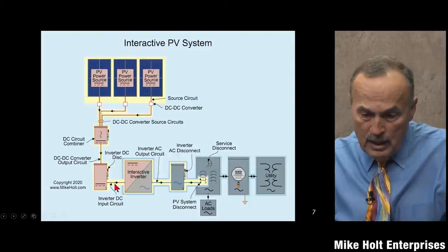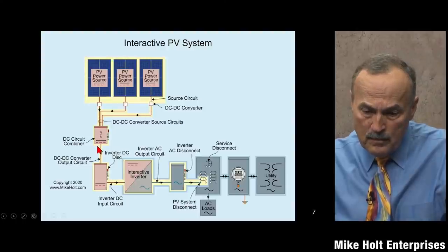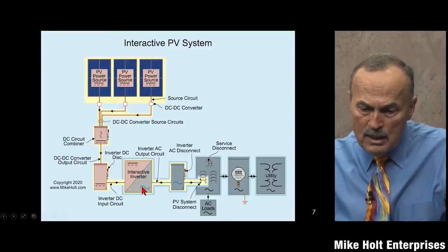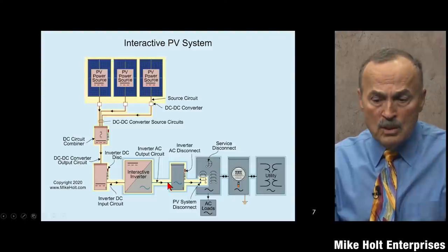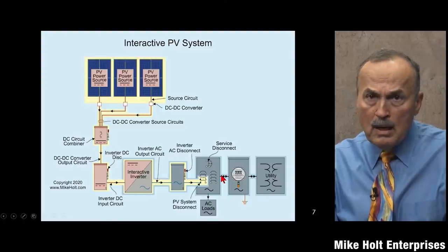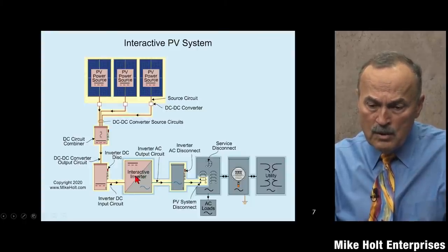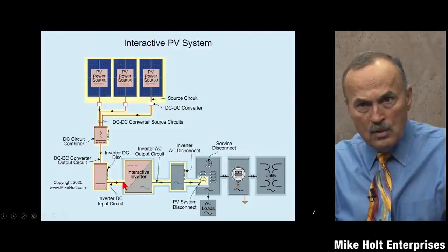Looking at this graphic again: here's the inverter DC disconnect, here's the inverter. The arrow going one direction shows DC coming in - we use pink and red lines to represent DC. Then we invert it to alternating current, shown in blue. The utility wiring is shown in black. The direct current coming into the inverter is called the inverter DC input circuit.